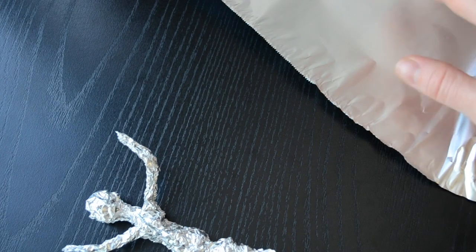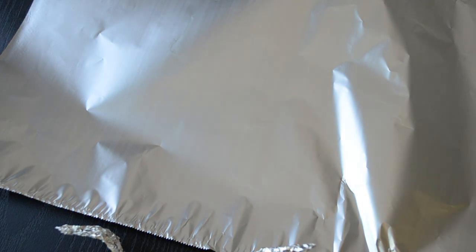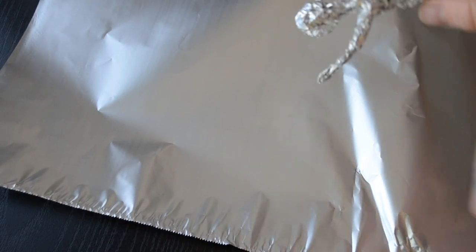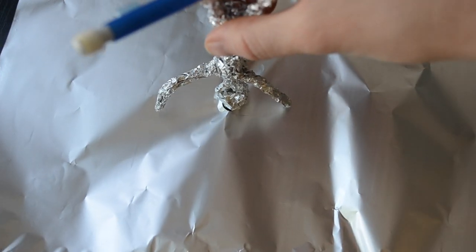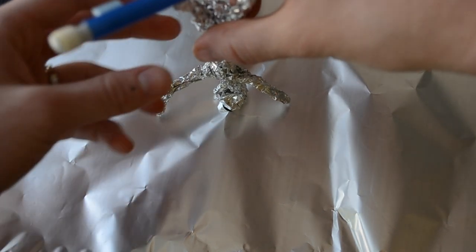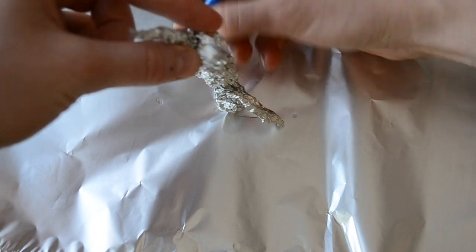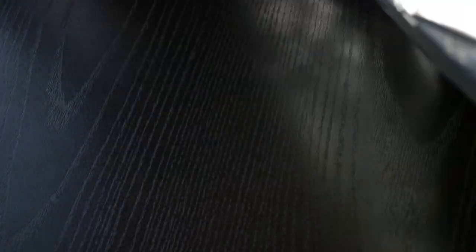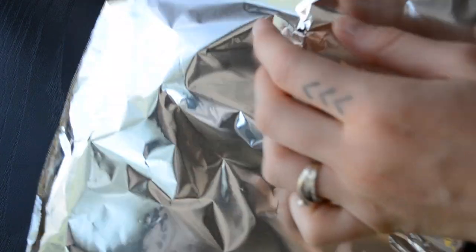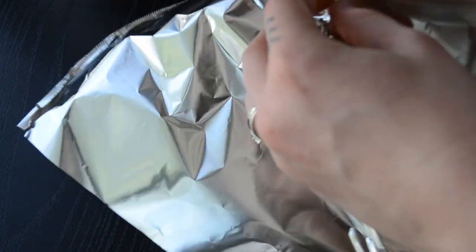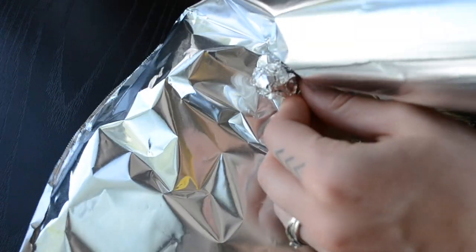So start with your already created foil person and then get a relatively large piece of foil. As you can see, this is how much bigger than the person it is. In the center of your piece of foil, poke a hole in it with either a pencil or a toothpick or something, and then that's where you're going to be pushing the head through the foil.